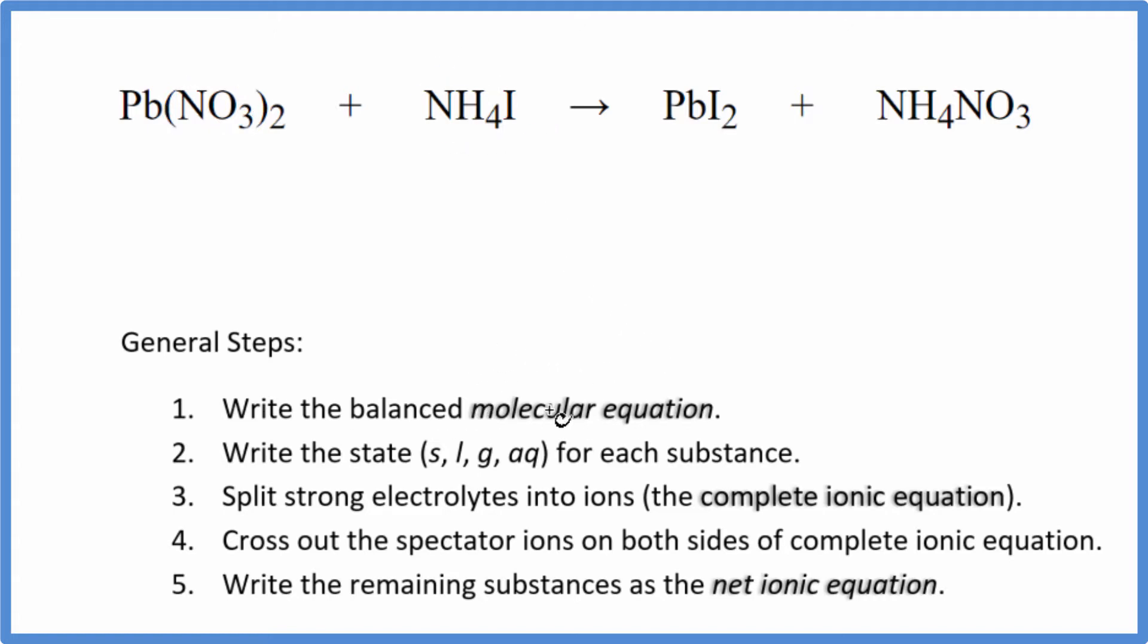First thing we need to do for net ionic equations, we need to balance the molecular equation. I can see right off that I have a nitrate here, I have two of them, but only one here. So I'm just going to put a 2 in front of my ammonium nitrate. That balances the nitrates, but now I have two ammonium ions and just one here. So I'll put a 2 here. That balances the ammoniums. Now I have two iodines, but I have two of them here. That's good. And one lead on each side. So this is the balanced molecular equation.